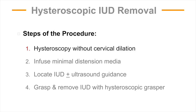To review the steps of the procedure: step 1 is performing hysteroscopy without cervical dilation; step 2 is the infusion of minimal distension media; step 3 is identifying the IUD; and step 4 is grasping and removing the IUD under direct visualization.